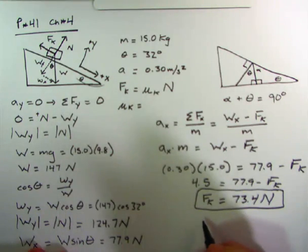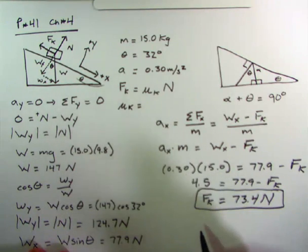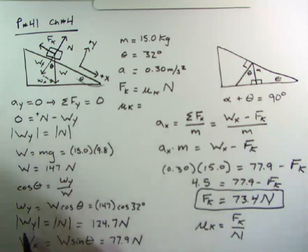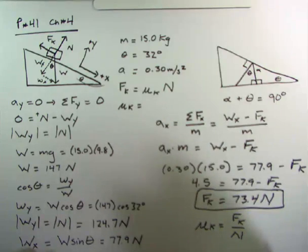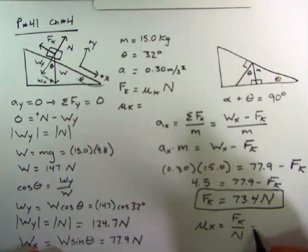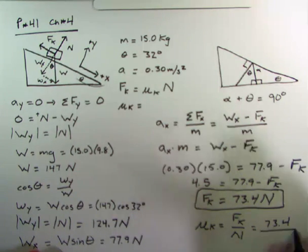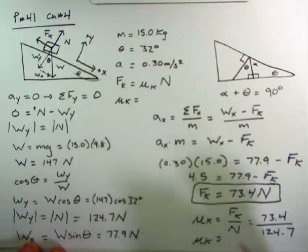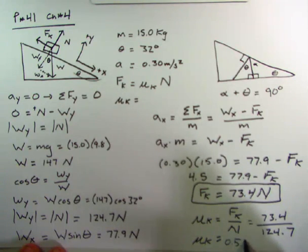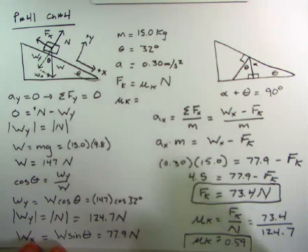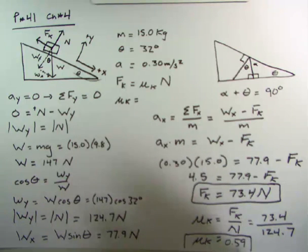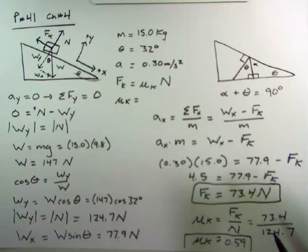And then of course, once we have that, we could say that mu sub k is equal to f sub k divided by the normal force, which is also equal to the y component of the weight. So that would be 73.4 divided by 124.7. Therefore mu sub k ends up being 0.59. And remember, there's no units on mu sub k. It's a force divided by a force and newtons cancel. So we have solved for the force of kinetic friction. We've solved for the coefficient of kinetic friction. Life is good. Life is really good here.